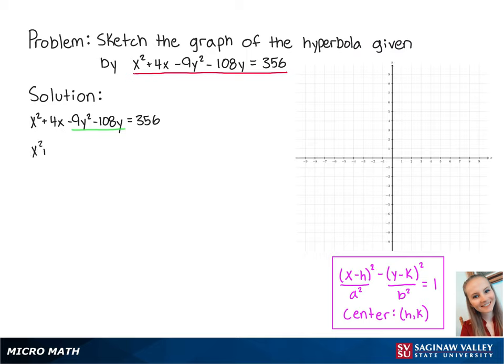After we do this, we have x squared plus 4x minus 9 times y squared plus 12y equals 356. To complete the square, we need to add 4 to this binomial, so we're going to add 4 to the right side. We also need to add 36 to this binomial.